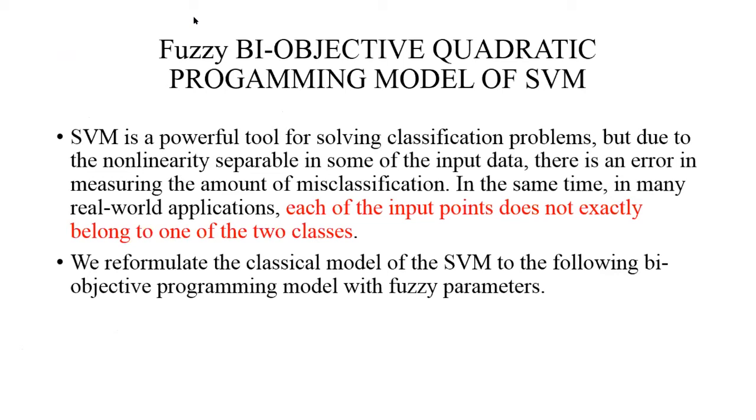Fuzzy bi-objective quadratic programming model of SVM. SVM is a powerful tool for solving classification problems, but due to the non-linearity separable in some of the input data, there is an error in measuring the amount of misclassification. In the same time, in many real world applications, each of the input points doesn't exactly belong to one of the two classes. We reformulate the classical model of the SVM to the following bi-objective programming model with fuzzy parameters.